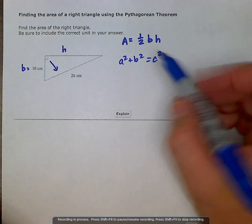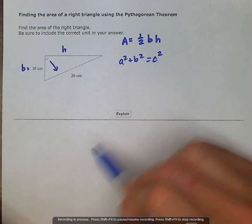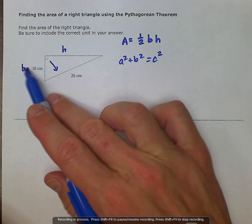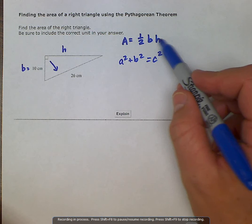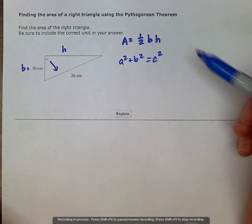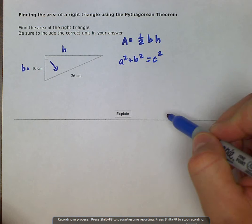And we can use this Pythagorean Theorem to solve for this length and get our height, and then go ahead and plug in the values here to solve for our area. And it says to be sure to include the correct unit in our answer.